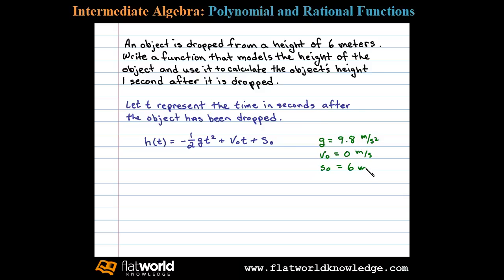Okay, so in this case, for g we'll substitute 9.8, for v naught we'll substitute 0, and for s naught we'll substitute 6. And that gives us the model.